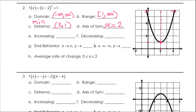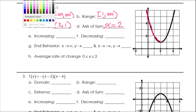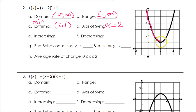Where is it increasing? Where is it decreasing? Well, if you were traveling on a journey from left to right, part of the way you would be decreasing — going downhill, downhill, downhill — until you get to the vertex. And then you turn a corner, and you start going uphill, uphill, uphill. The uphill part is increasing, and the downhill part is decreasing.